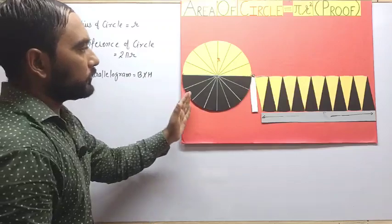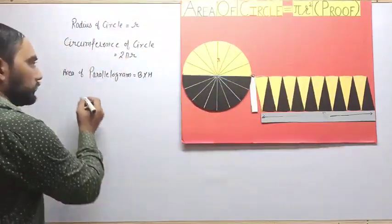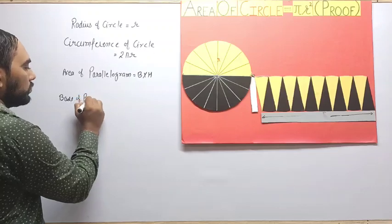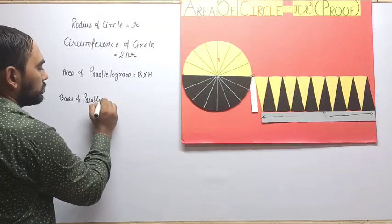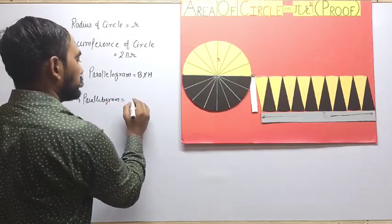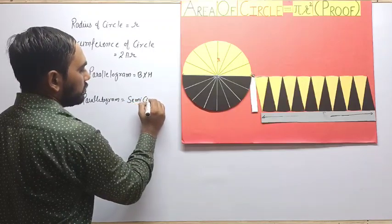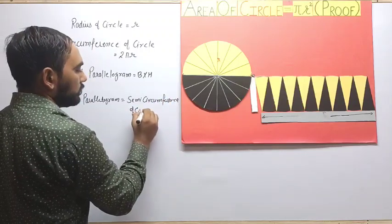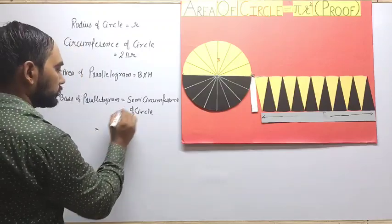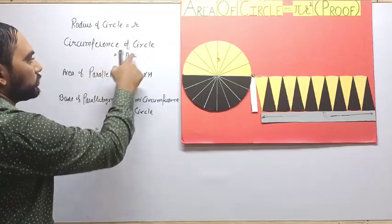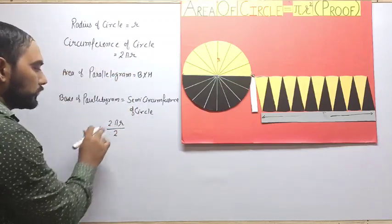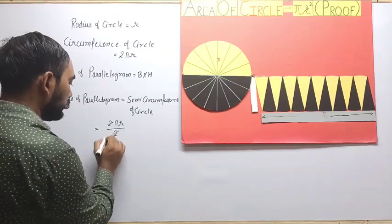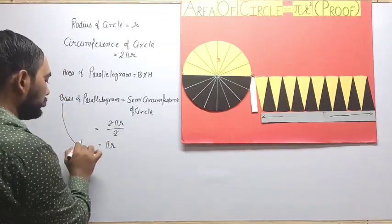We derive the area of a circle with the help of a parallelogram. The base of the parallelogram is equal to the semi-circumference of the circle, which is equal to 2 pi r divided by 2. The 2s cancel out, giving us pi r. So the base of the parallelogram is equal to pi r.